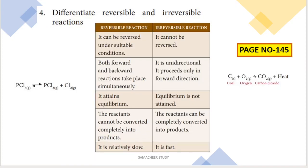Last question: differentiate reversible and irreversible reactions. A reversible reaction can be reversed under suitable conditions, while an irreversible reaction cannot be reversed. In a reversible reaction, both forward and backward reactions take place simultaneously — shown with a double arrow symbol. Irreversible reactions are unidirectional and proceed only in the forward direction.